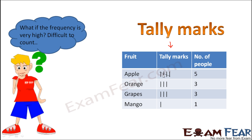There is a specific pattern in which we draw these lines. Let's say we start counting how many times apple occurs: 1st time, 2nd time, 3rd time, 4th time — and when it is the 5th time, we cross it. Then again 6th, 7th, 8th, 9th, and on the 10th time we cross it again. That is how we make the tally marks.